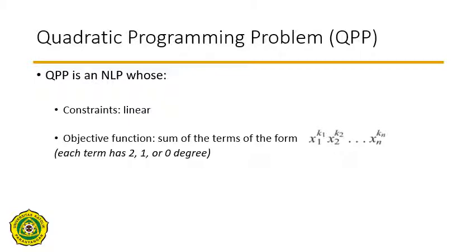A quadratic programming problem is a non-linear programming problem whose constraints are linear. The objective function is the sum of terms where each term is a multiplication of decision variables, but there is a requirement that each term has degree 2, 1, or 0. If you have a term with degree 3 or 4, it is not a quadratic programming problem.